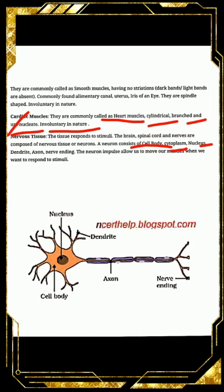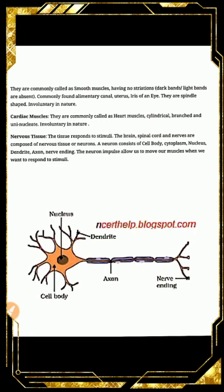The neuron has: cytoplasm, nucleus, dendrites, axon, and nerve endings — these are all its parts. Neuron impulses allow us to move our muscles when we want to respond to stimuli. Whenever an external change occurs, our neurons allow us to respond to that external environment.